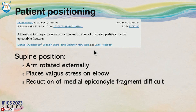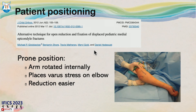Regarding surgical tips and tricks, surgery for medial epicondyle ORIF has traditionally been described in the supine position, though some surgeons have proposed the prone position. Proponents of prone positioning argue that in the supine position, external rotation of the arm places valgus stress on the elbow, making reduction of the medial epicondyle fragment more difficult. In prone positioning, internal rotation places varus stress on the elbow, making reduction easier.